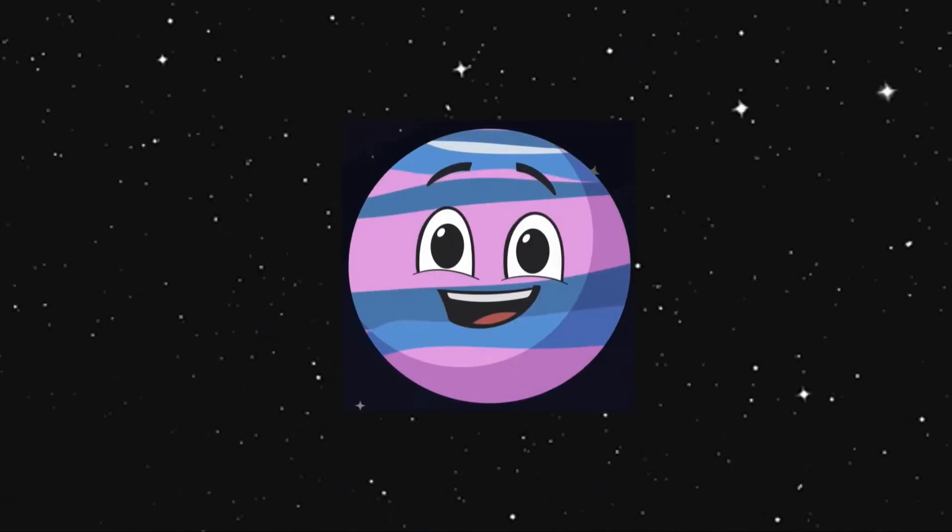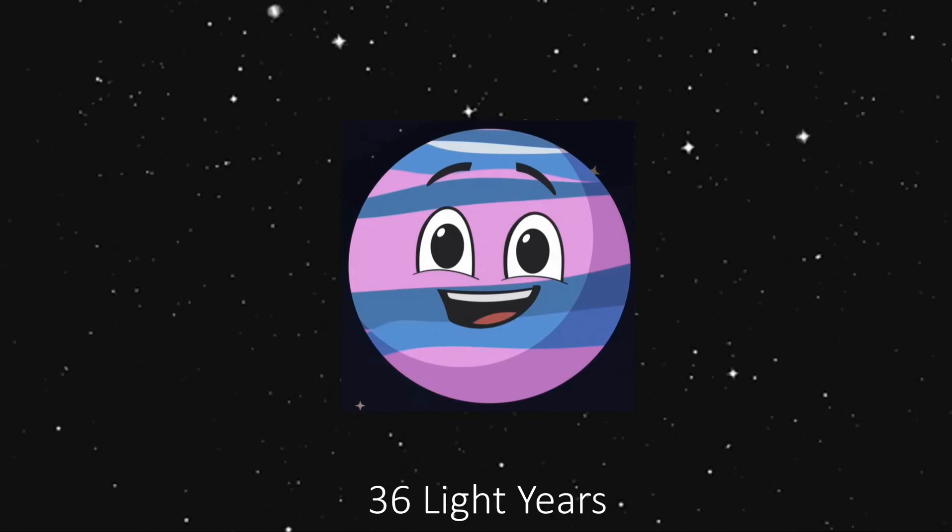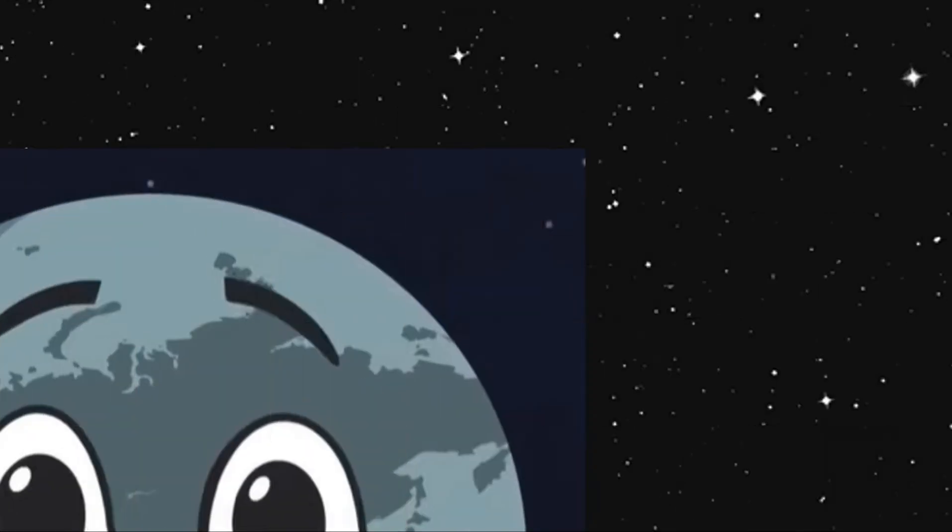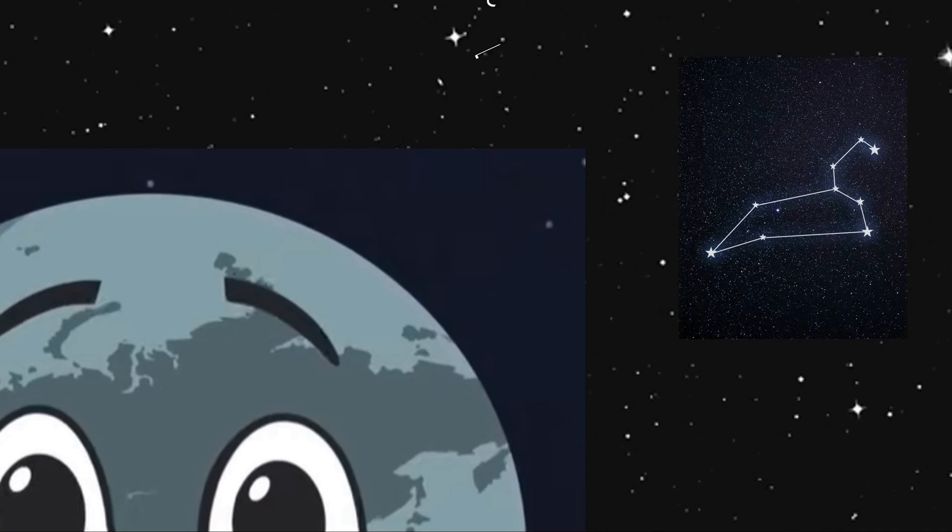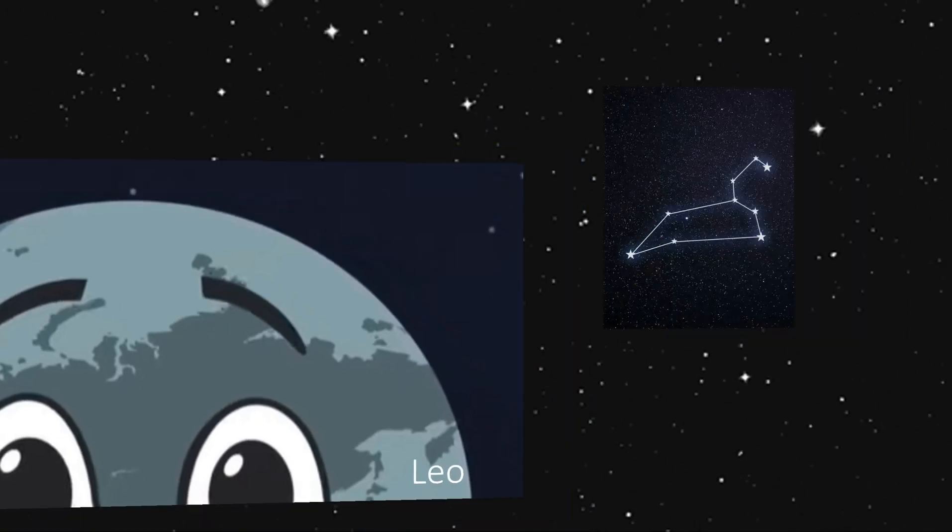Kepler 186 system is about 500 light years from Earth, I'd like to tout. In the constellation of Cygnus is where I reside.